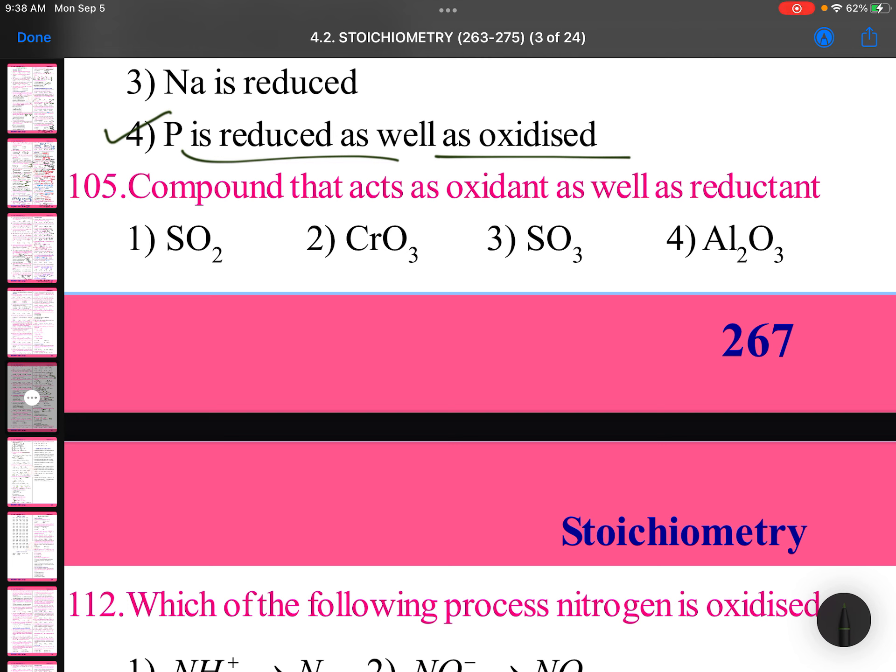Compound that acts as oxidant as well as reductant: intermediate oxidation states can function like oxidizing agent and reducing agent. Sulfur plus 4, it can go to plus 6, it can go to minus 2. So intermediate states act as oxidizing agent as well as reducing agent.